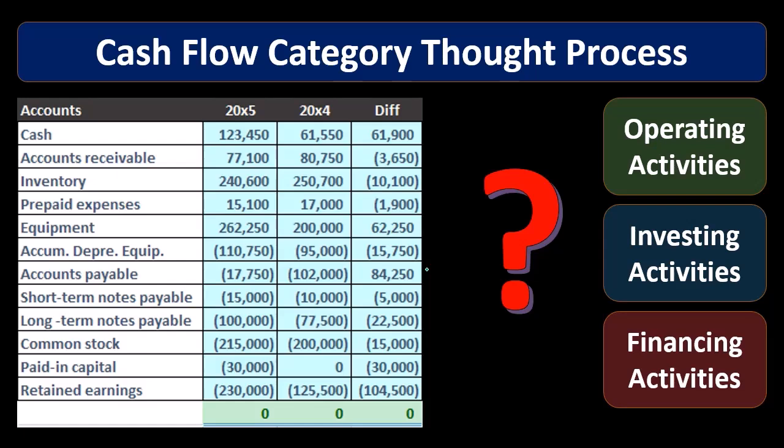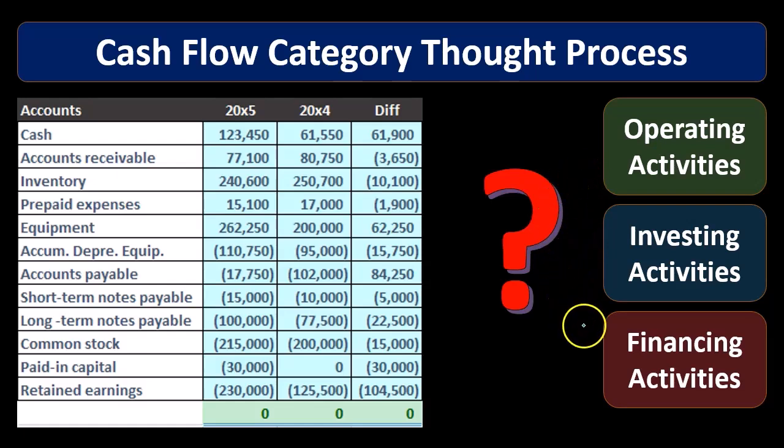These categories represent cash flow. Once we look at each of these cash flow areas, we then need to determine whether they are going to go into operating activities, investing activities, or financing activities. Let's take a look at an outline of a statement of cash flows.